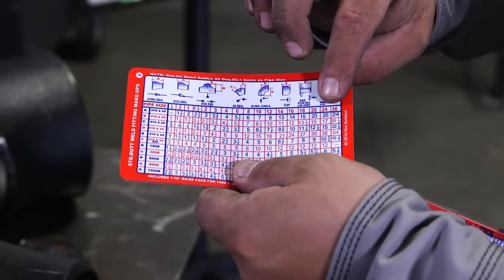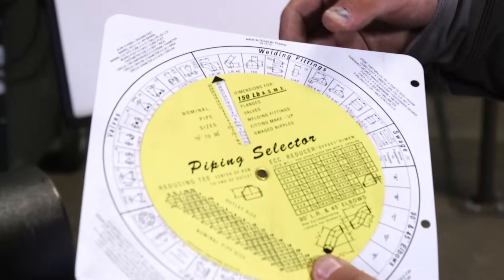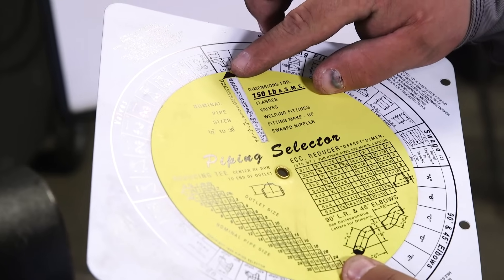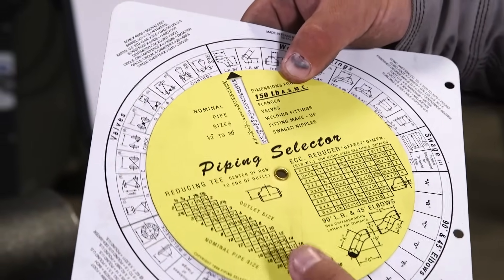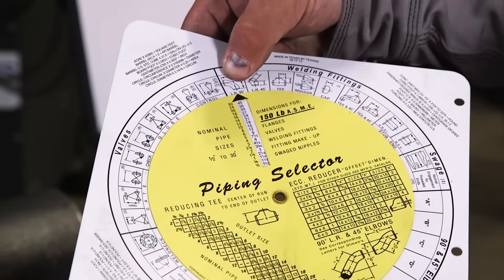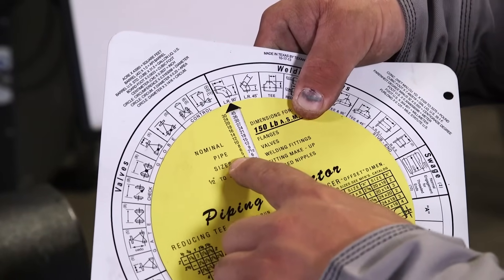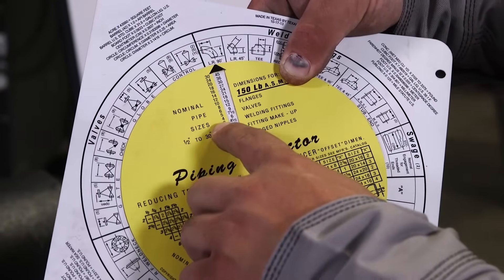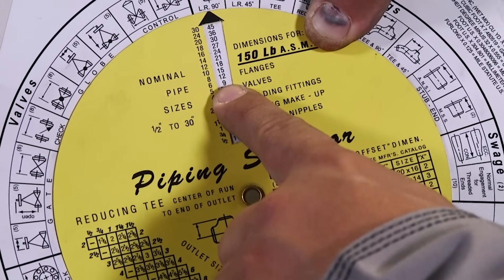So on the piping selector wheel here, to find your takeoffs, you just point this arrow here to whatever fitting valve or whatever takeoff you need. Right now we have it pointing at our long radius 90. And your nominal pipe size right here is on the side. You come up to 6 inches. Number right next to it, that's your takeoff. So 9 inches.